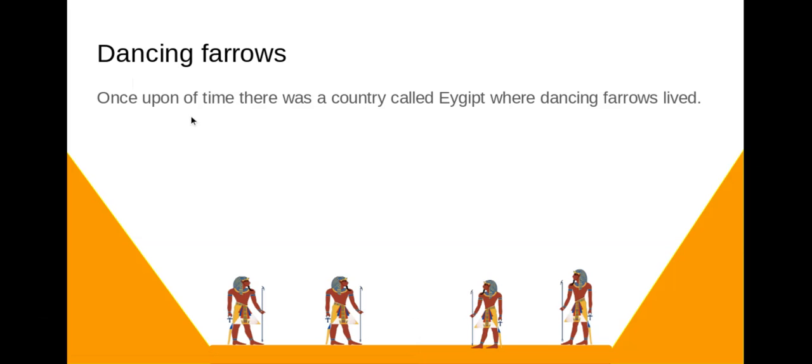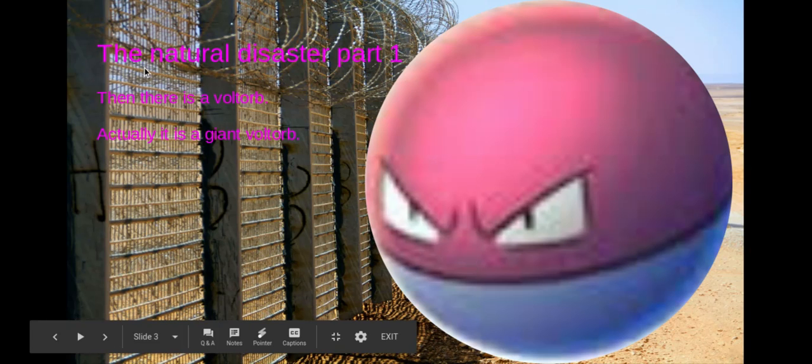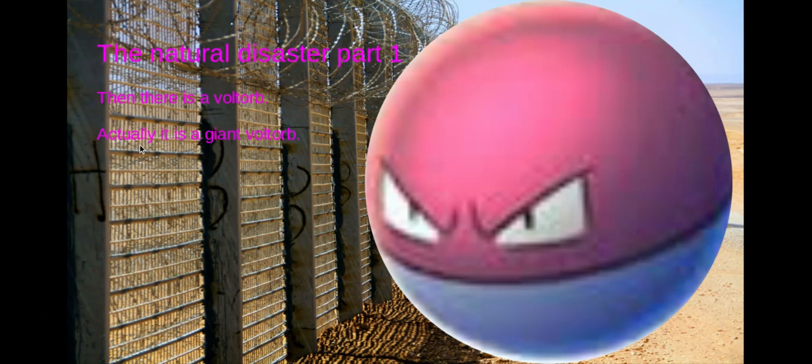Once upon a time there was a country called Egypt where dancing pharaohs lived. There was a Voltorb and a giant. Actually, there was a giant Voltorb. That Voltorb was big.